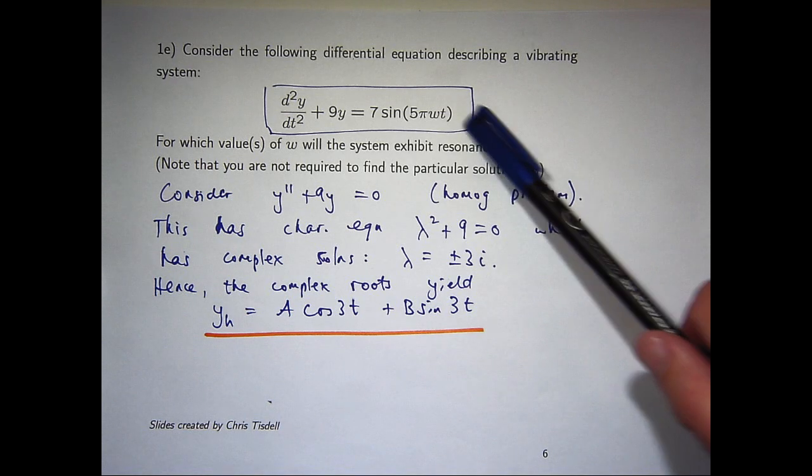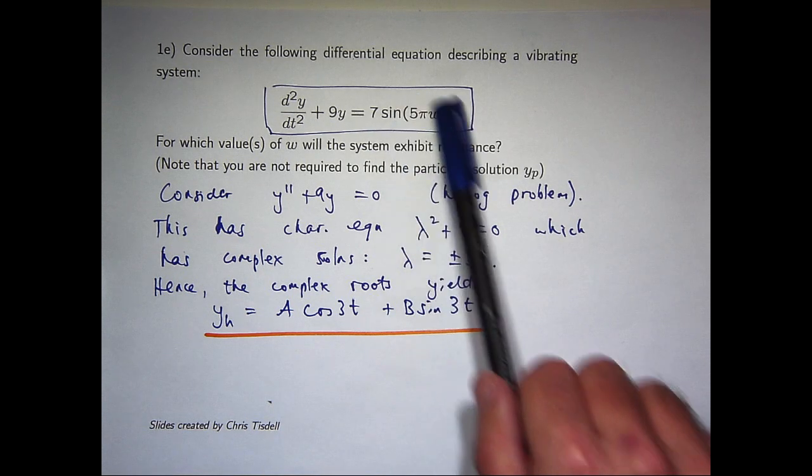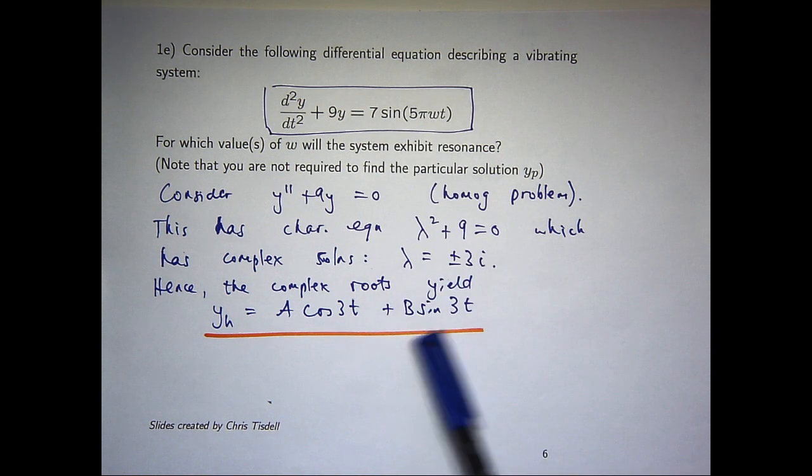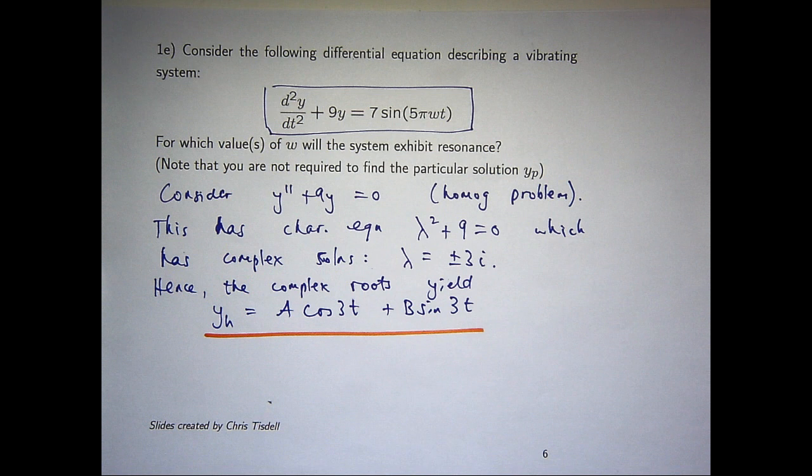Let's say this was 7 sine 3t here. Well, there's a sine 3t already in the homogenous solution. So I can't choose, say, c cos 3t plus d sine 3t for my particular solution.